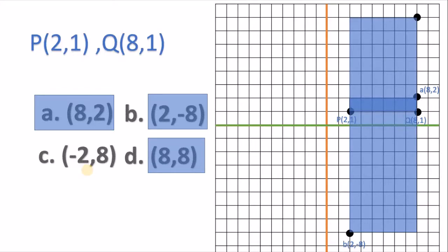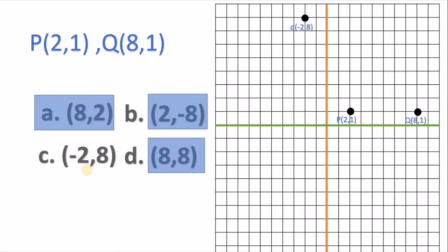The next is d. (8,8) - it will also make a rectangle. Now the last option is (-2,8). We will clearly see that it doesn't form a rectangle but it forms a parallelogram. It doesn't form a rectangle, so by plotting method it cannot be vertices of the rectangle.